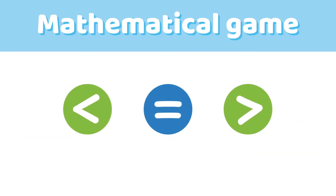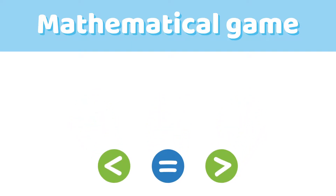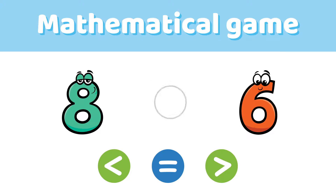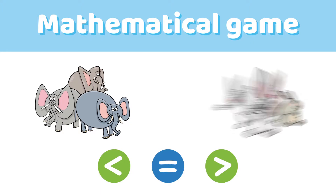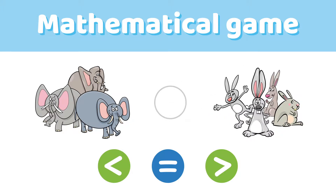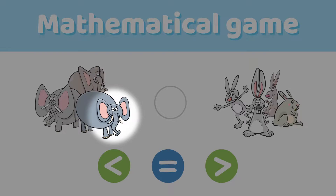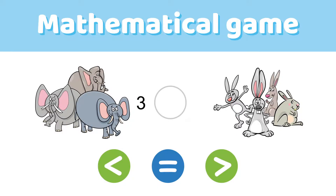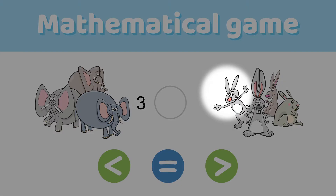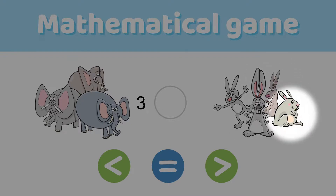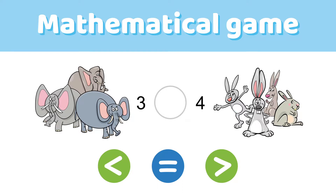Are you ready for some math puzzles? Here we go! What do you think — is eight greater than six? Can you solve this? Let's count on the left: one, two, three. We have three items on the left. Let's count on the right side now: one, two, three, four. We have four items on the right.